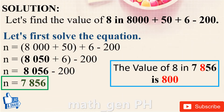Solution: Solve the expression step by step. 8,000 + 50 = 8,050. Then 8,050 + 6 = 8,056. Finally, 8,056 − 200 = 7,856. Now find the value of 8 in 7,856. The digit 8 is in the hundreds place, so its value is 800. Answer: 800.